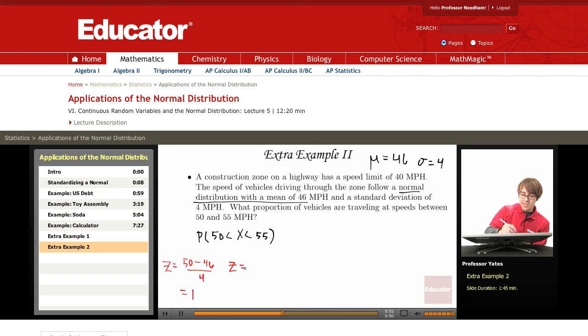Then I'm taking z equals my observation, which is 55, minus the mean, which is 46, divided by the standard deviation, which is 4, and that gives me a value of 2.25.